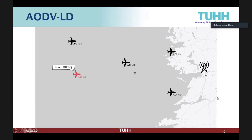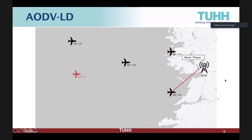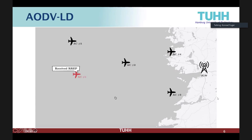You see here a bunch of aircraft. We have a red one, aircraft number one, which wants to find a route to the internet gateway. First we see the route request broadcasted. Now we see it arriving for a second time and being dropped as the route lifetime is bad. Now it arrives the first time at the internet gateway and is not replied to, but the timer is started. It arrives a second time but now from the better route. Then when the timer expires, it takes the better route and answers aircraft number one. When the route reply arrives at aircraft number one, the route is set up and aircraft number one can send its data to the internet gateway.